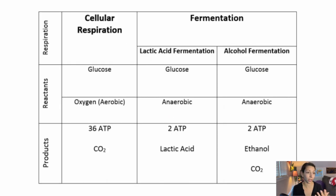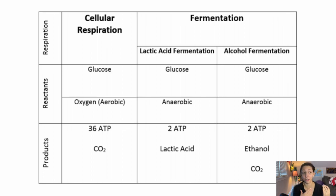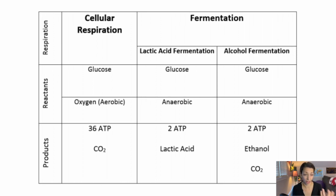Let's take a look at a chart comparing what goes in and what comes out of each of these. For cellular respiration, we need glucose and oxygen — that's what makes it an aerobic process — and the products are 36 ATP molecules and carbon dioxide. For our two types of fermentation: lactic acid fermentation requires glucose, alcoholic fermentation also requires glucose. They are both anaerobic processes, meaning they occur without the presence of oxygen. They both produce two ATP. Lactic acid fermentation also produces lactic acid as a byproduct, while alcoholic fermentation produces ethanol and CO2 as byproducts.